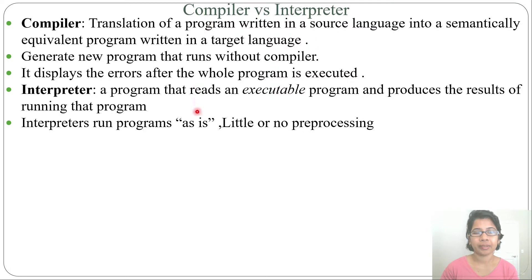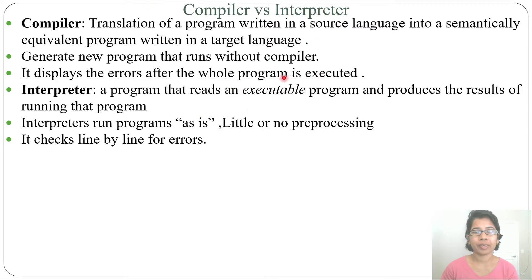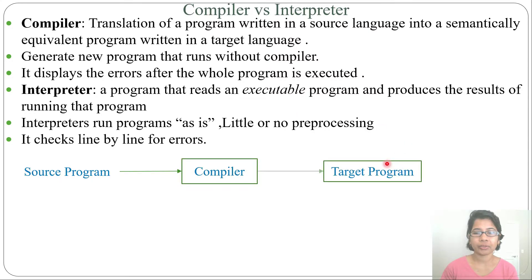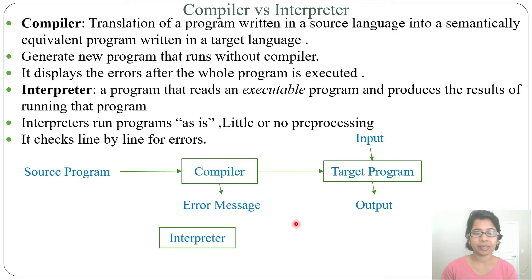An interpreter checks line by line for errors, whereas a compiler checks the whole program for errors. For example, suppose this is a compiler and there is some source program — the compiler will convert the source program into a target program. With that target program, you can give some input and get some output. The compiler also gives error messages.